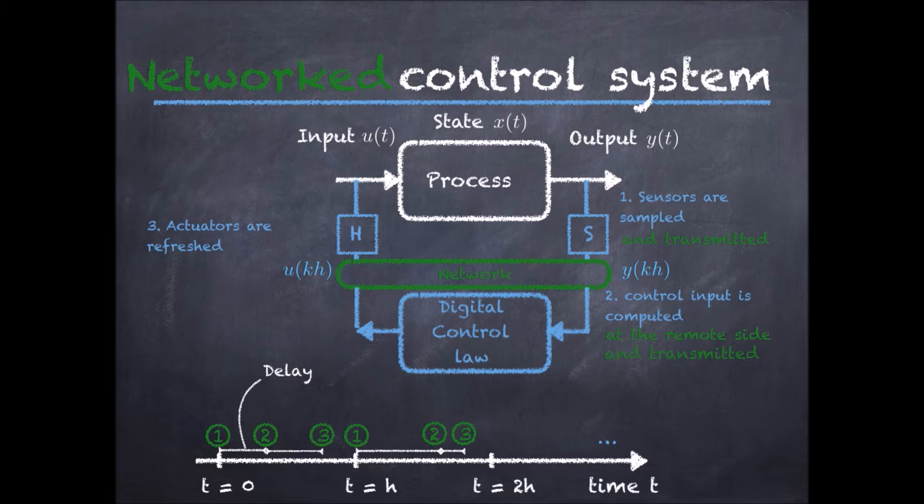Note that now the delays can be quite different, since in a communication network, these are typically stochastic, and this is an important feature of networked control systems.